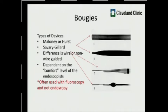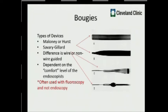The most common bougies are the Maloney and the Savory, differing in wire-guided versus non-wire-guided options. In our hospital, thoracic surgeons tend to be comfortable with bougies, while bariatric surgeons and gastroenterologists often prefer balloon techniques. It really depends on your comfort level. If you are going to use a bougie, it's imperative to have fluoroscopy readily available, especially for severe strictures and those requiring wire guidance.